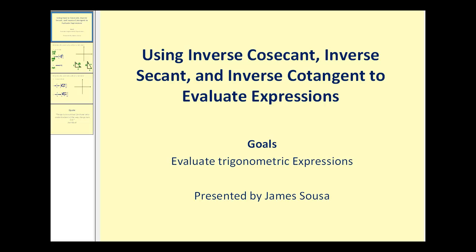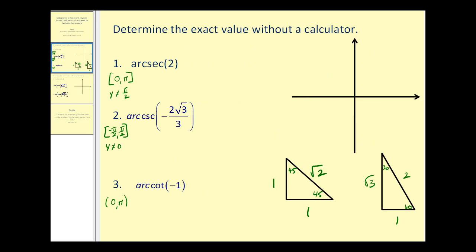Welcome to a lesson on using inverse cosecant, inverse secant, and inverse cotangent to evaluate expressions. On these problems we want to determine the exact value without a calculator. I've done some preliminary work — notice at the bottom I have our reference triangles. These will be very helpful in determining these values. I also listed the possible outputs for these inverse trig functions.